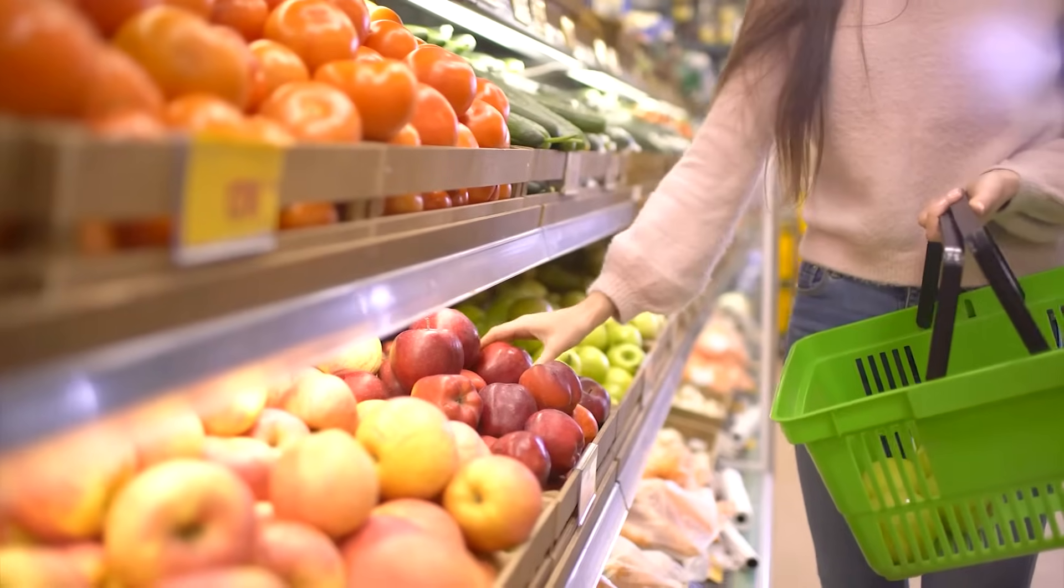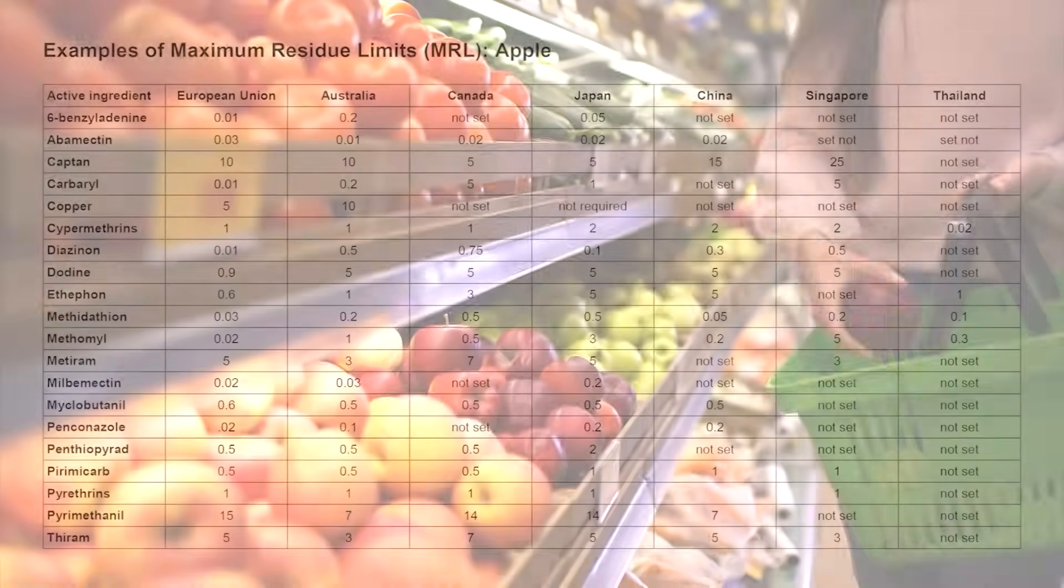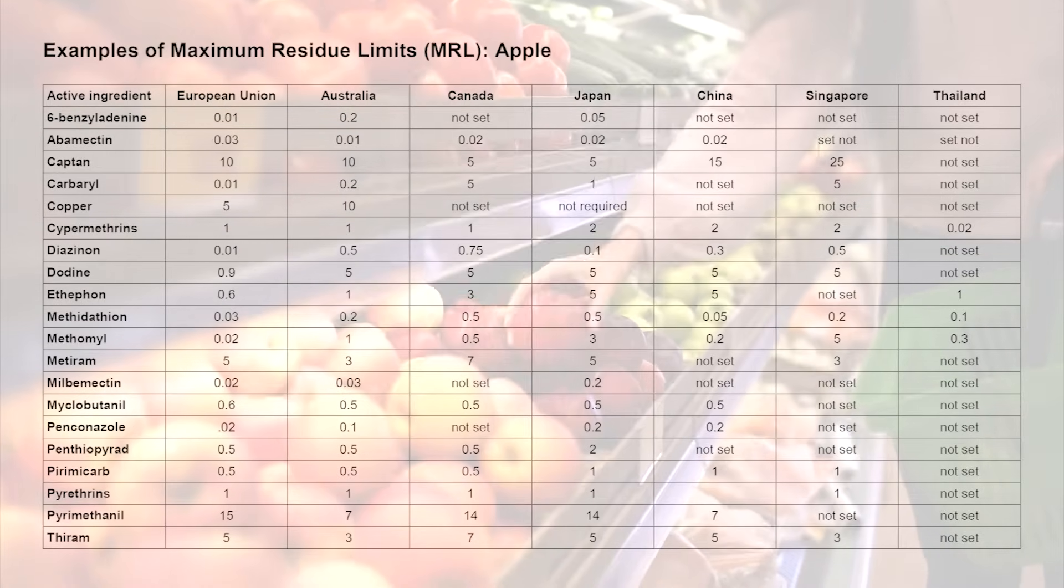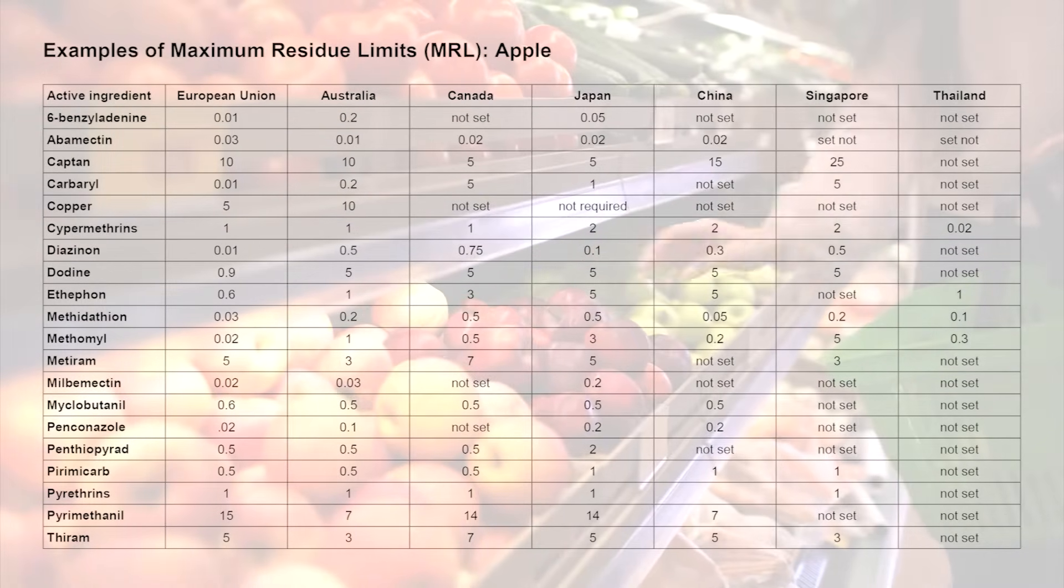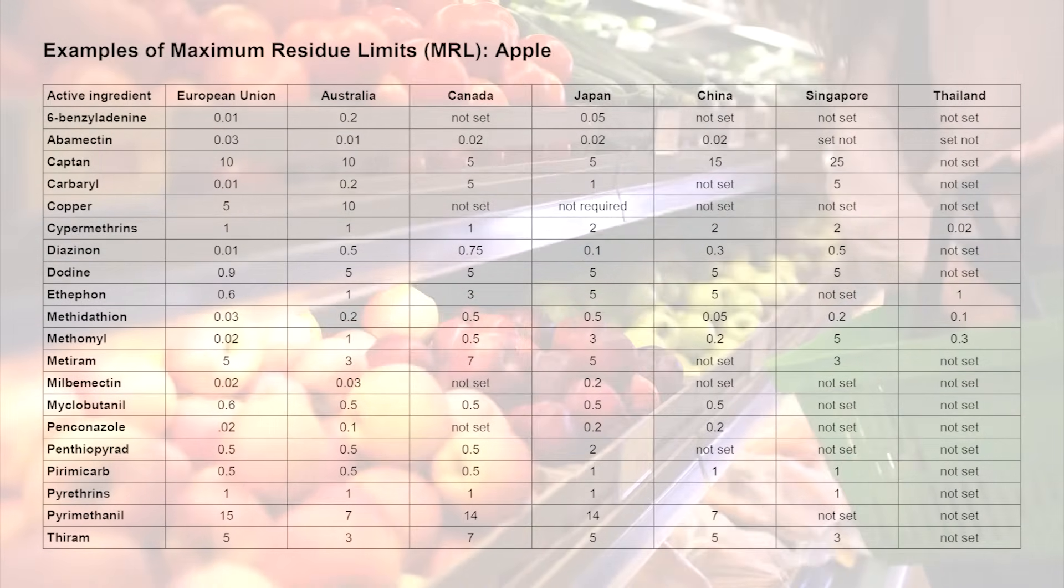Food safety regulations require food and animal feed to be rigorously tested. The maximum residue limit is the highest amount of an individual pesticide that is permitted to be present.